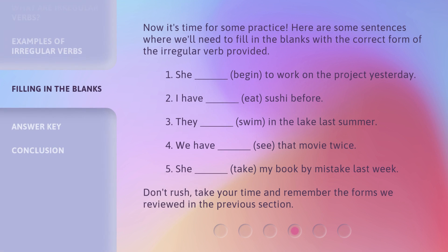Now it's time for some practice. Here are some sentences where we'll need to fill in the blanks with the correct form of the irregular verb provided. 1. She (blank / begin) to work on the project yesterday. 2. I have (blank / eat) sushi before. 3. They (blank / swim) in the lake last summer.